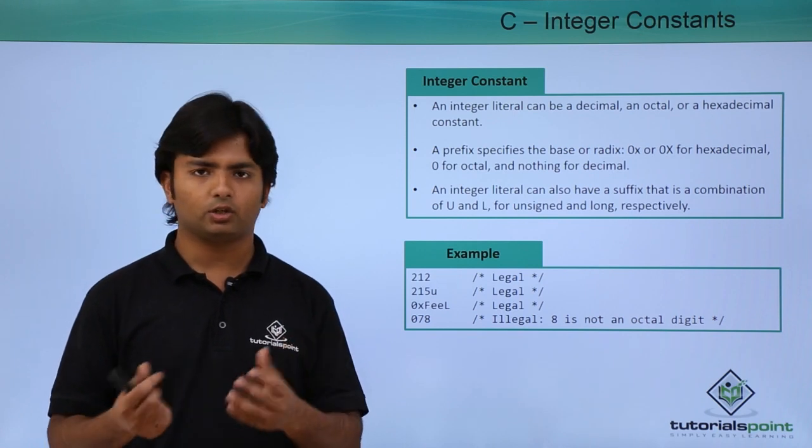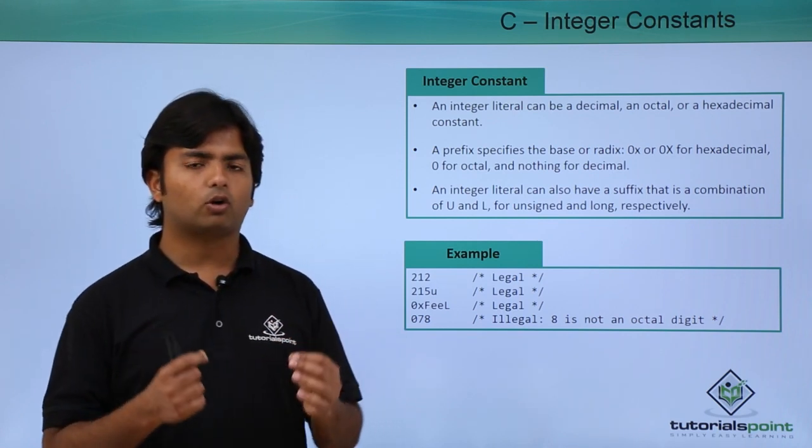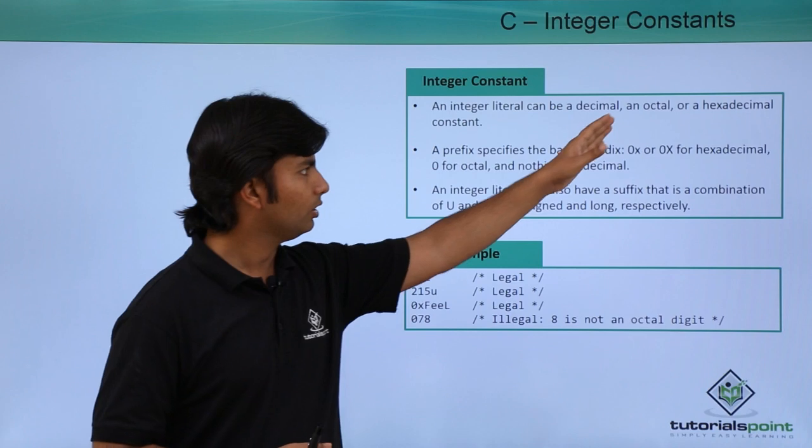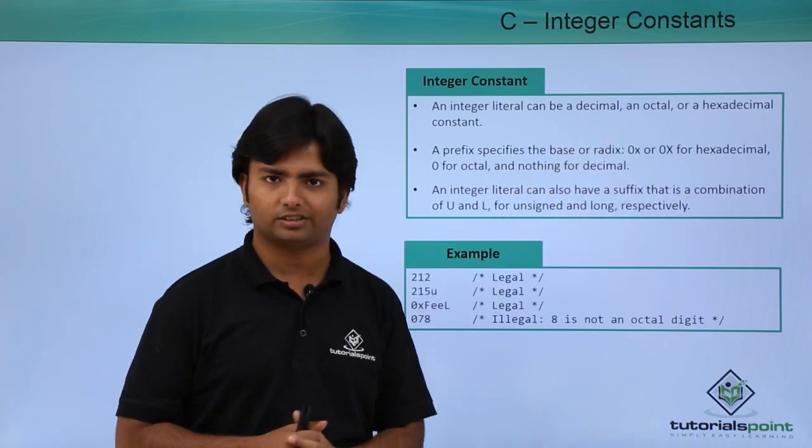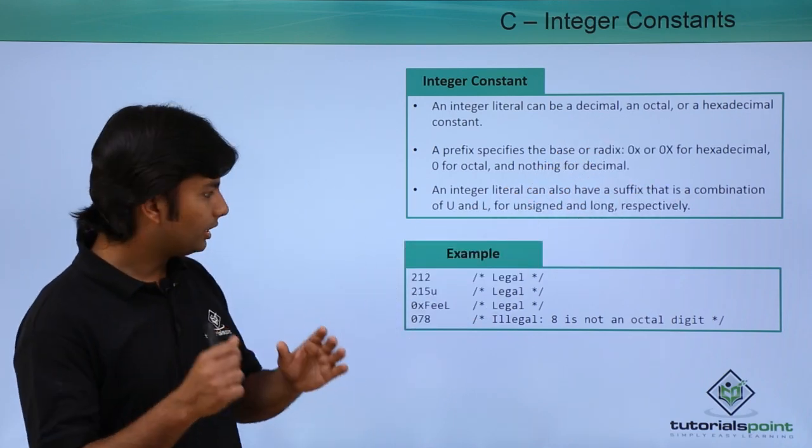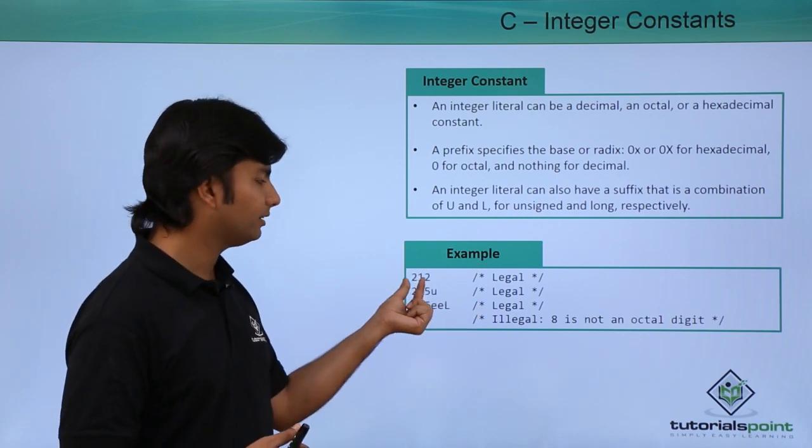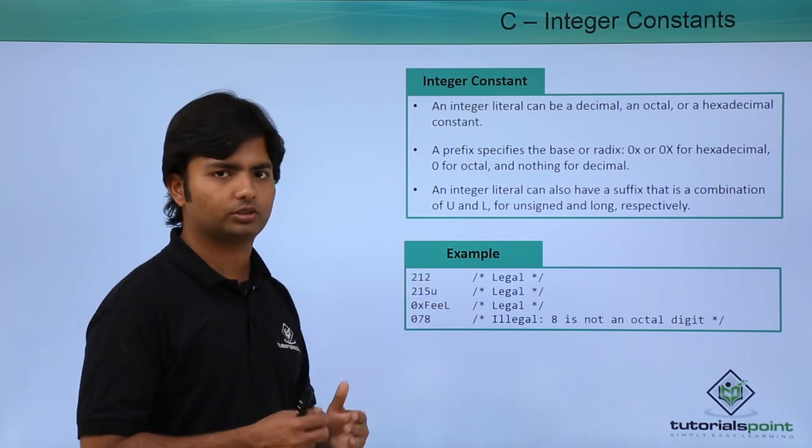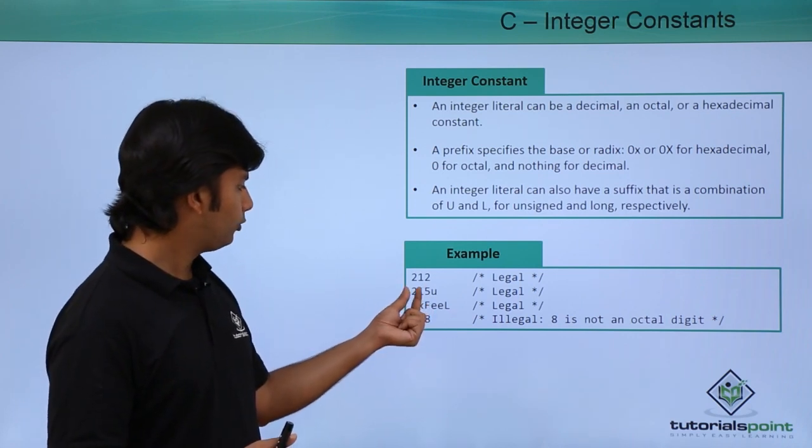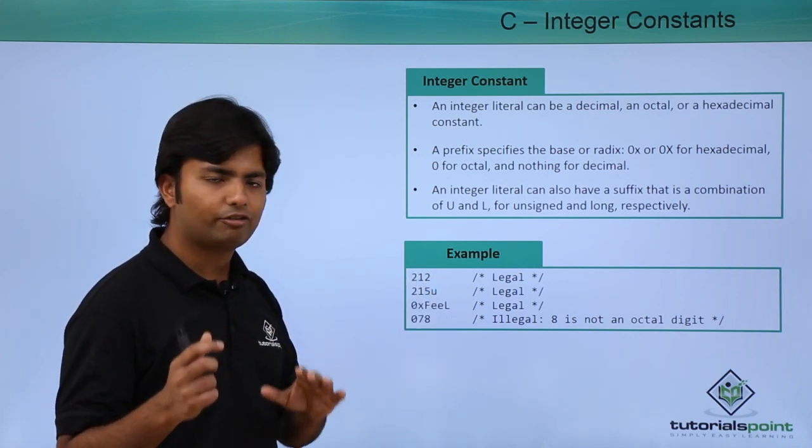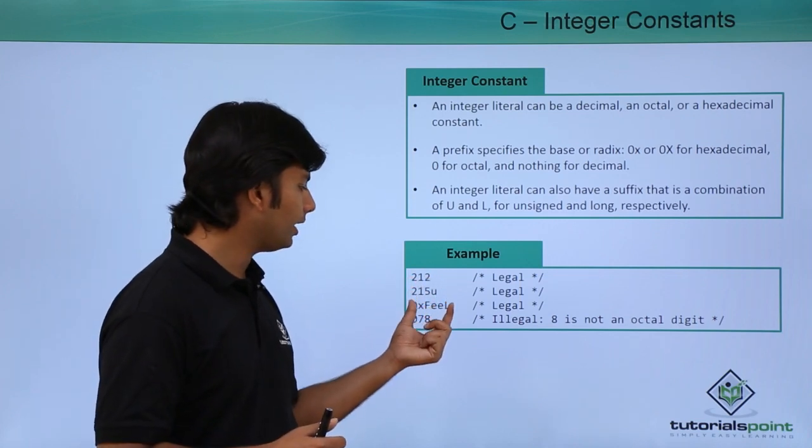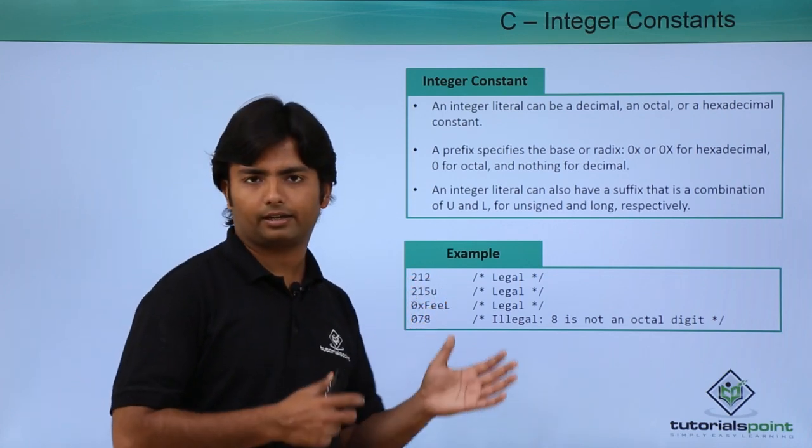You can also supply values like decimal, octal, and hexadecimal. So in case you want to write any normal number, you can write like this—like here 212 is a normal whole number. But if you will write the alphabets like U and L, it will be like unsigned or long numbers.